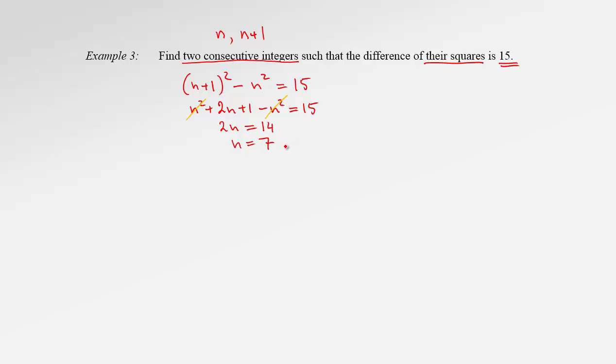Okay, since N is 7, then the other number, N plus 1, is equal to 8. So we're ready to answer the question. Find two consecutive integers with this property, that the difference of squares is equal to 15.